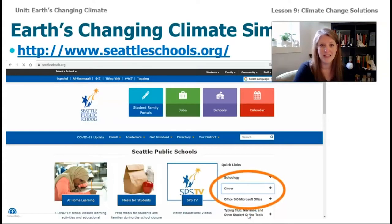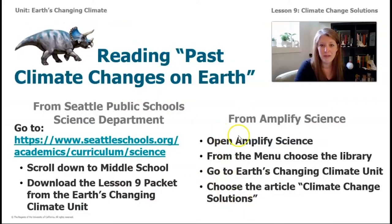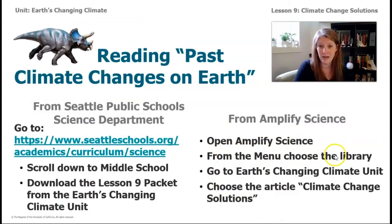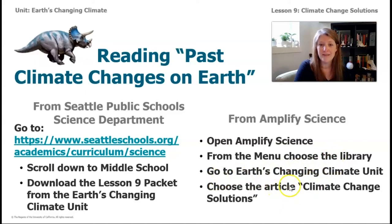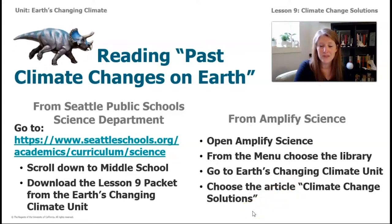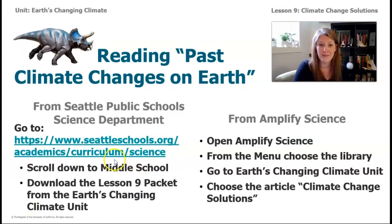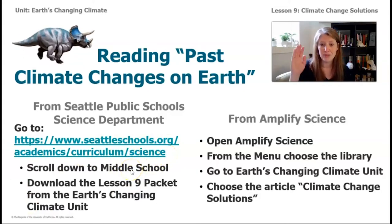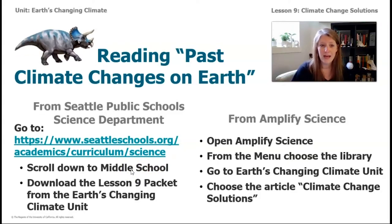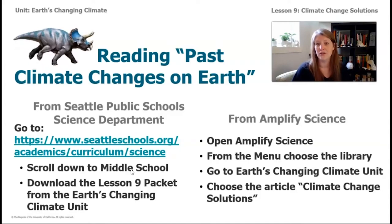There's a really cool article we're going to read about climate change solutions. The best way to access it is to log on to your Clever account if you're a sixth grade student in Seattle schools, then open Amplify Science, choose the library, go to Earth's Changing Climate unit, and choose the article Climate Change Solutions. If you can't access Clever or Amplify, go to seattleschools.org/academics/curriculum/science, scroll down to middle school, and download the lesson nine packet, which contains the article.